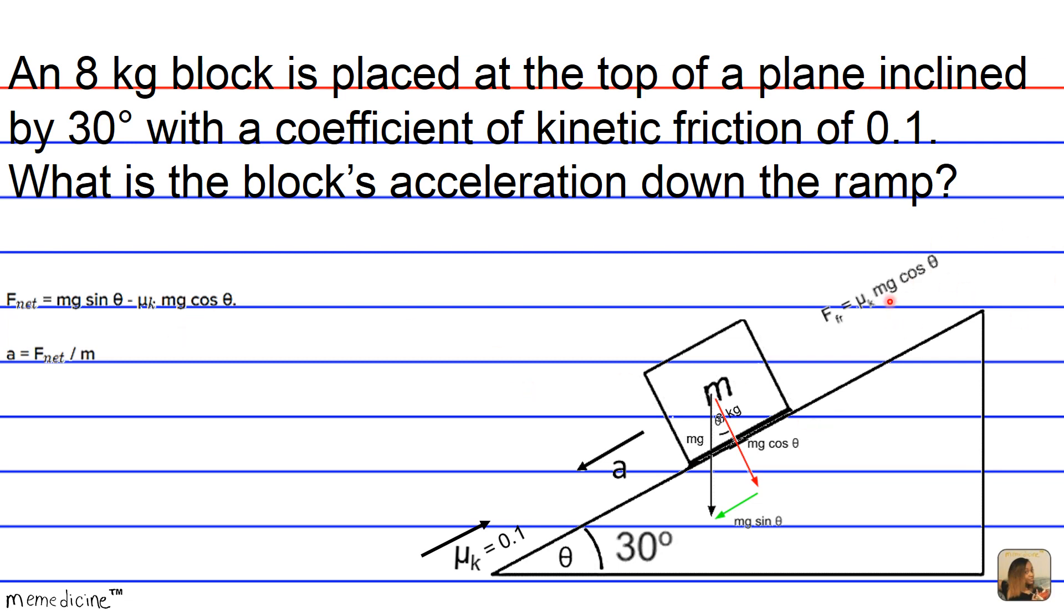And if we divide F net by the mass, according to Newton's second law, we're going to get the net acceleration. But we know that our net acceleration is equivalent to all this mess with the m or the mass divided out. So it's going to be equal to g sine theta minus mu sub k g cosine theta.